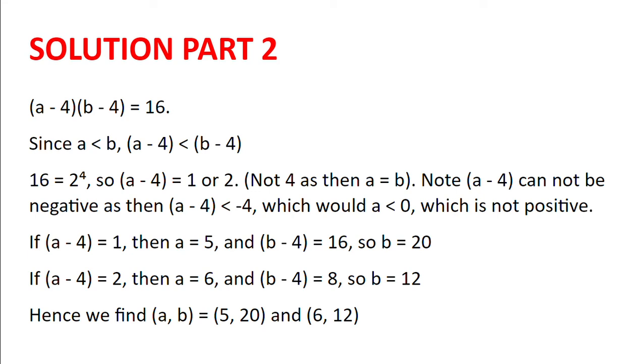If a minus 4 is 1, then a equals 5 and b minus 4 is 16, so b equals 20. If a minus 4 is 2, then a equals 6 and b minus 4 is 8, so b equals 12. Hence we find (a, b) equals (5, 20) or (6, 12).